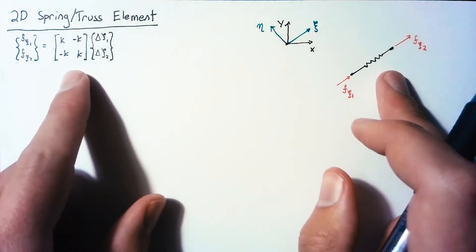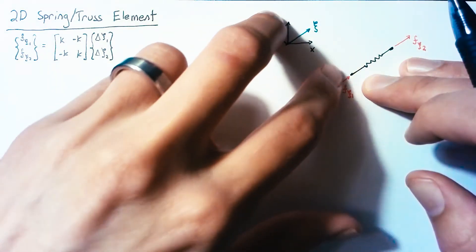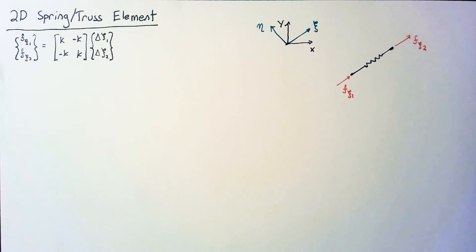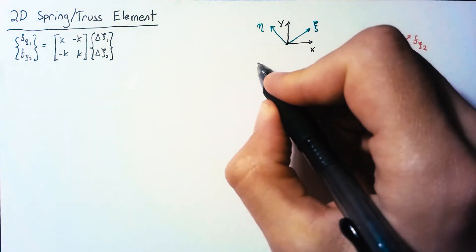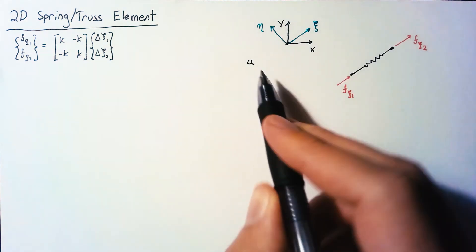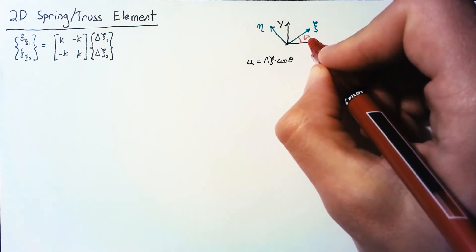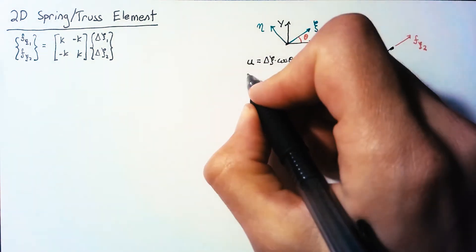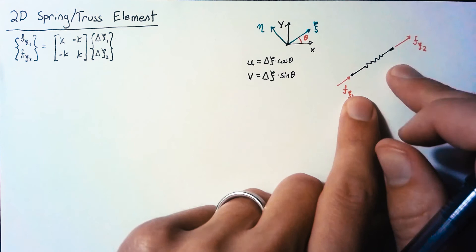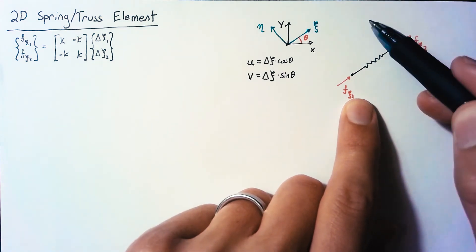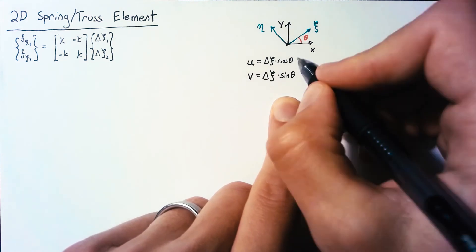This is a good start, but we really need to talk about this in the x and y reference frame. The reason is that it's very difficult to have multiple springs, each with multiple local reference frames, and describe how all those forces interact. So we talk about how the displacements are related. The displacement u in the x direction equals delta xi multiplied by cosine theta, where theta is the rotation angle between the two reference frames. The displacement v in the y direction equals delta xi multiplied by sine theta. But in two dimensions, it's possible for the spring to be rotated such that we also have some delta eta.